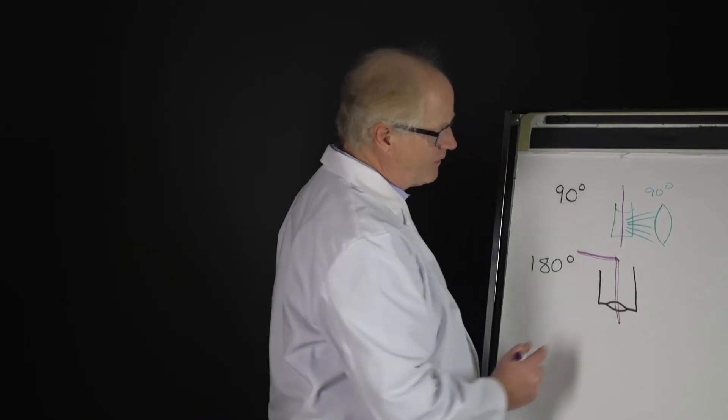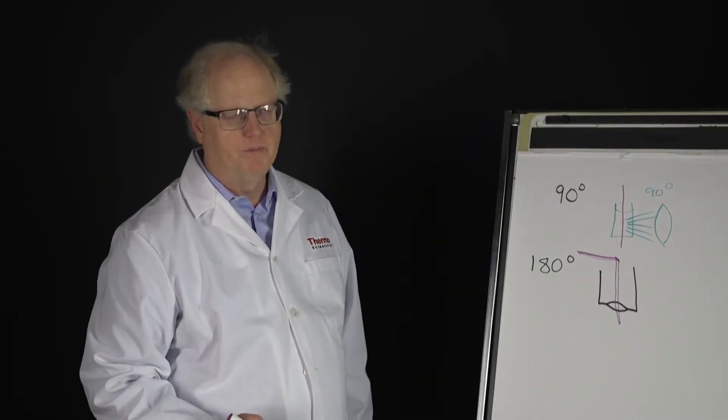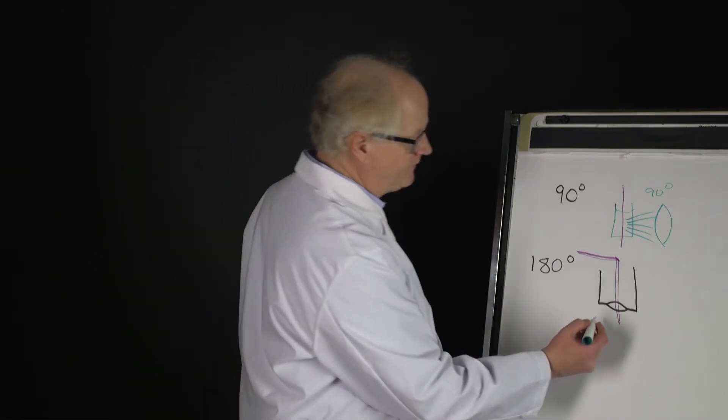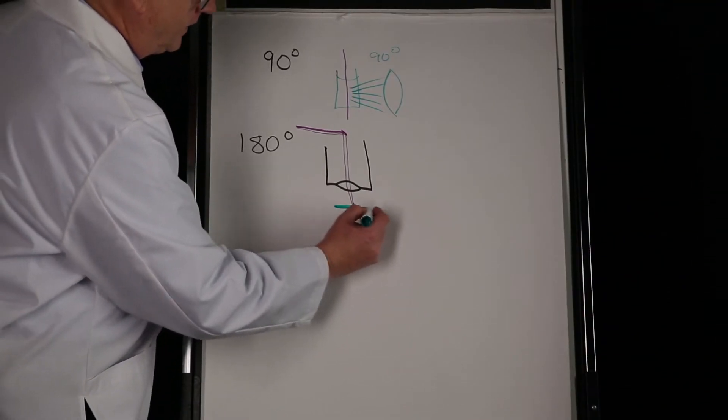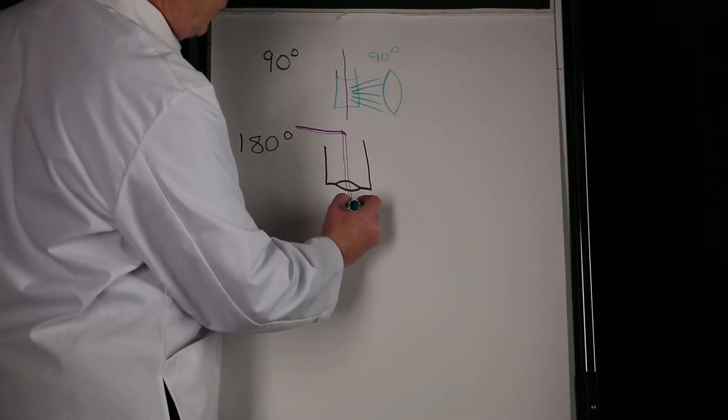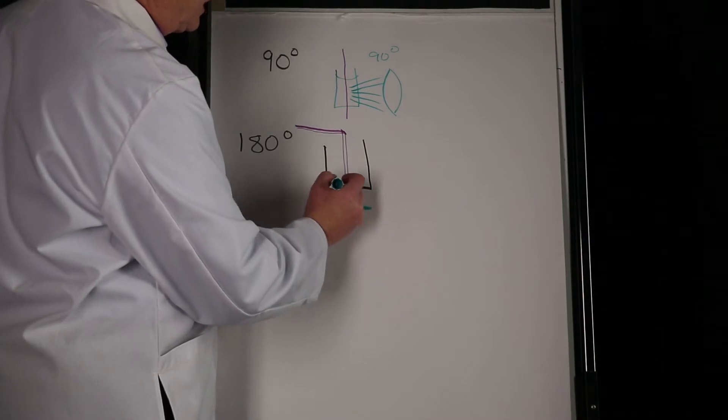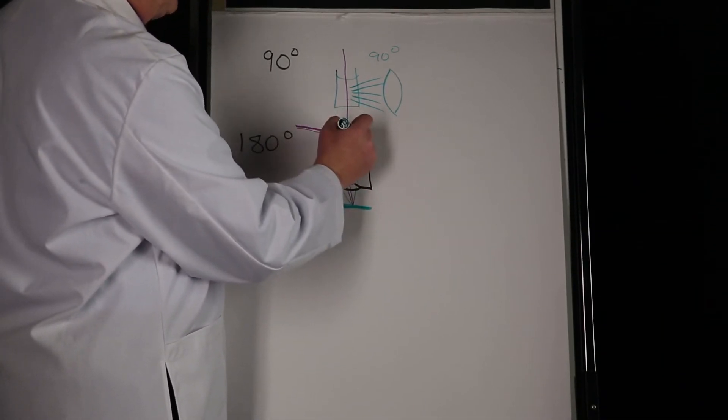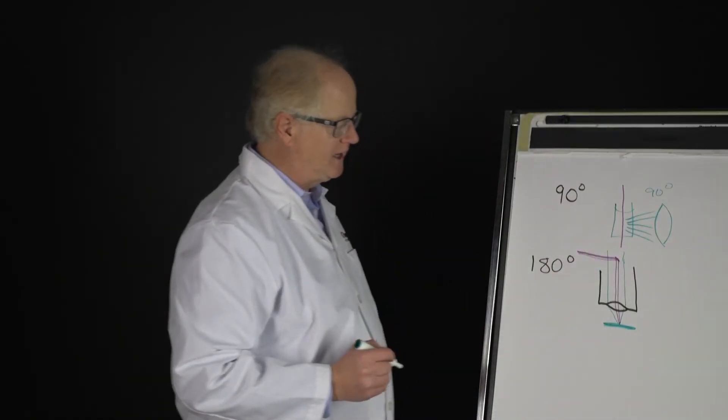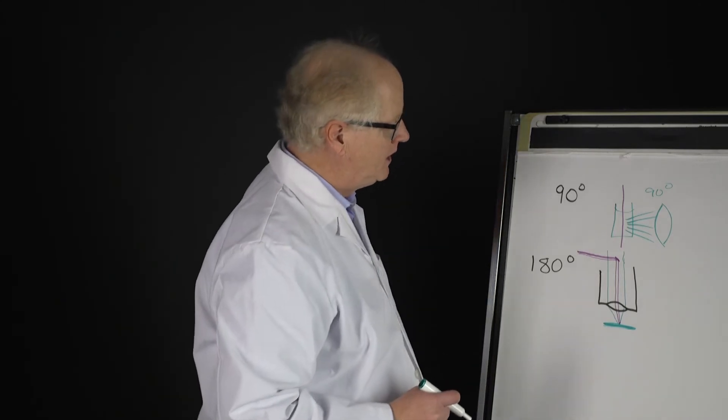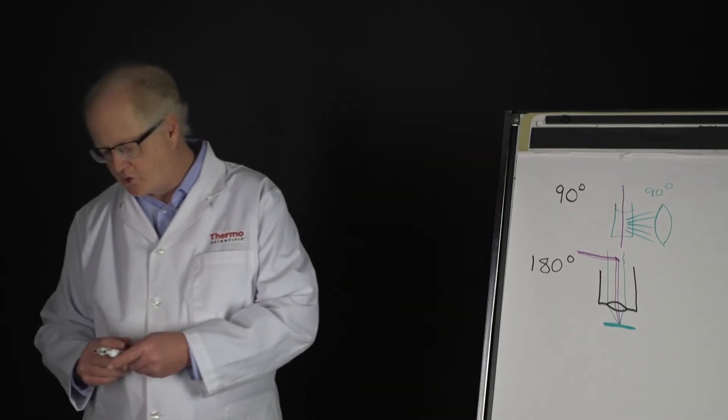That laser focuses down onto the sample, the sample which I'll draw here in green. The sample then scatters the Raman light back up through the system like this, and it's collected up through the optics in straight 180-degree collection right off the surface. So that is an extremely common way in which it's done nowadays.